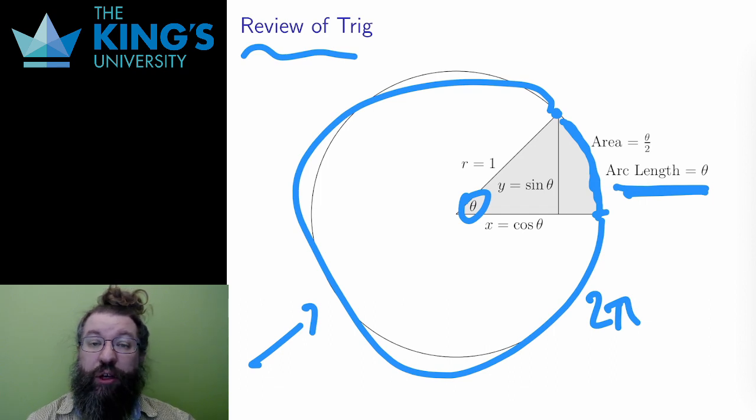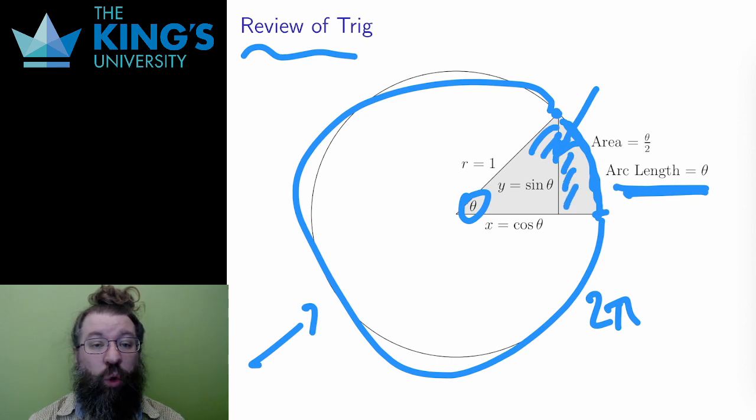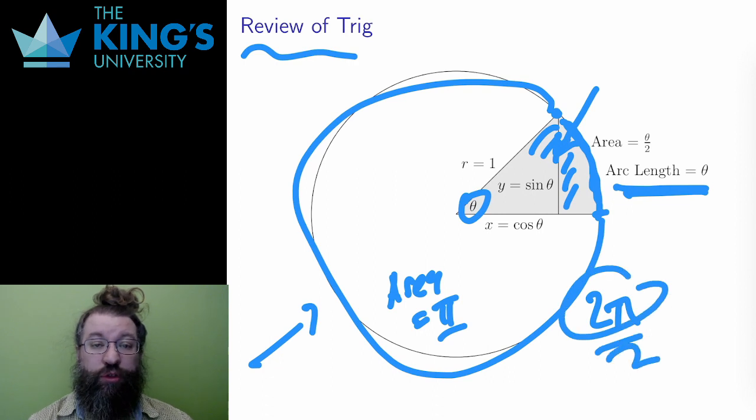Equivalently, I could define angle in terms of area. Since the area of the whole unit circle is π r squared, but r is 1, that means the area of the whole unit circle is π units of distance squared. This is one half of the arc length, which is 2π all the way around, so the area is one half of the angle in radians.